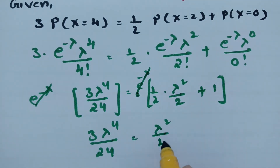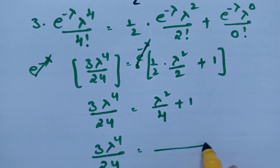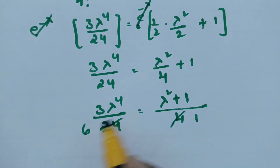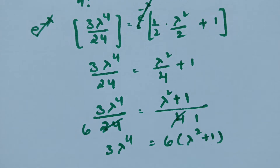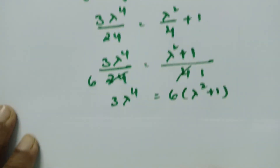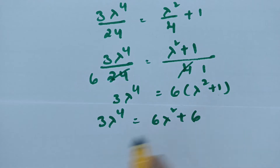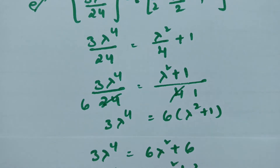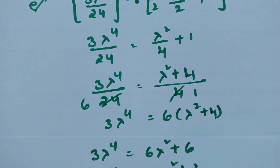Taking 4 as LCM on the right side gives lambda squared plus 4, all over 4. If I cancel the 4 in the denominator with 24, this gives 6. Cross-multiplying: 3 lambda to the power 4 equals 6 times lambda squared plus 1, which expands to 6 lambda squared plus 6. Canceling by 3 gives lambda to the power 4 equals 2 lambda squared plus 2.